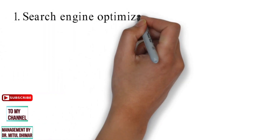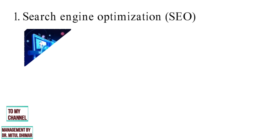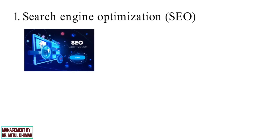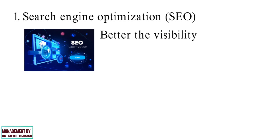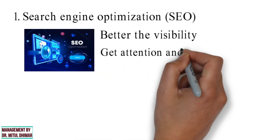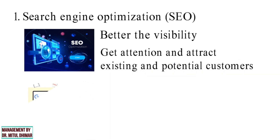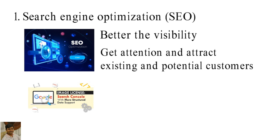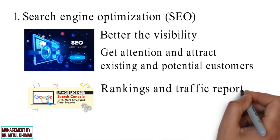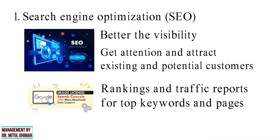Strategy number 1: Search Engine Optimization. In simple terms, it means the process of improving your site to increase your visibility for relevant searches. The better the visibility of your pages in search results, the more likely you are to attract existing and potential customers to your business. For example, Google Search Console is a free tool provided by Google and a standard tool in the SEO toolkit. It provides rankings and traffic reports for top keywords and pages, and can help identify and fix technical problems on the site.